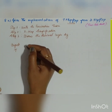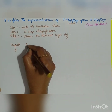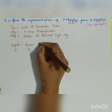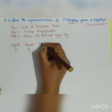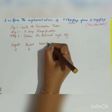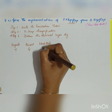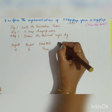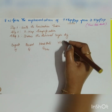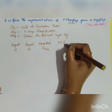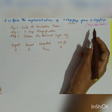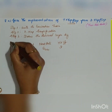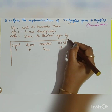The columns of the excitation table are: input T, present state Q, next state Q(n+1), and the flip-flop input. This is the specialty of the excitation table. Since we are using a D flip-flop, the flip-flop input column will be labeled D.